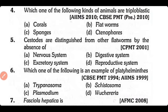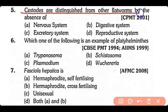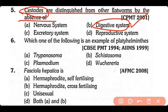Question no.5. Cestodes are distinguished from other flatworms by the absence of: nervous system, digestive system, excretory system, or reproductive system? The correct answer is option B. The digestive system is absent in class Cestoda, which is why they differ from other flatworms.